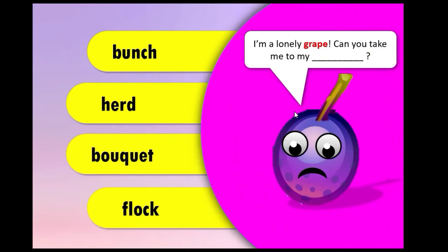Now let's practice a little bit about these collective nouns. Look at this one, guys. I am a lonely grape — can you take me to my collective noun? Could it be a bunch, a herd, a bouquet, or a flock? What is the correct word for grape? Yes, of course, you are right. In this case, it's bunch, because we are talking about grape. Remember — bunch of grapes, bunch of bananas. Good job, let's move on to the next example.